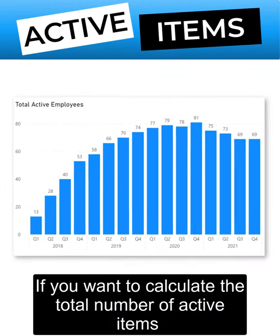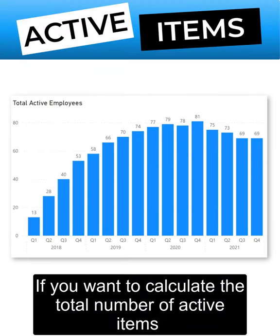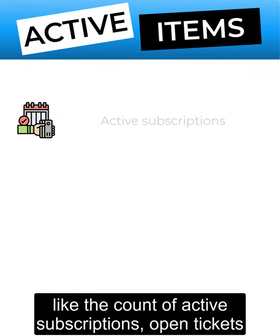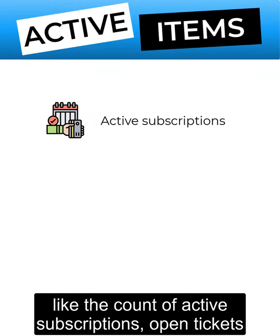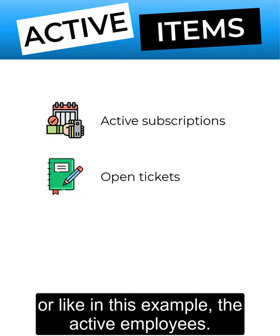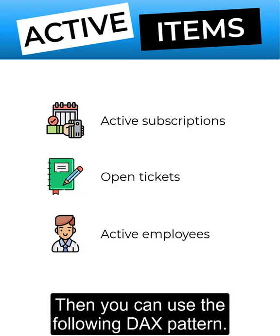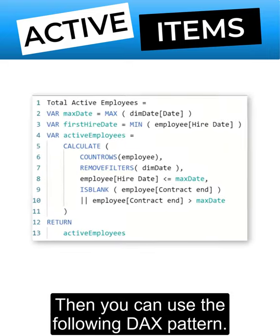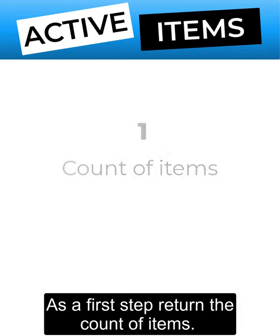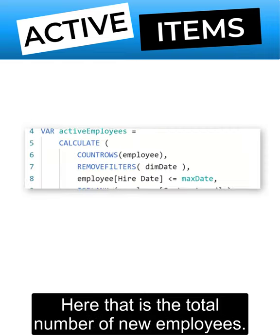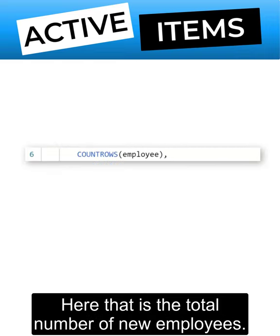If you want to calculate the total number of active items, like the count of active subscriptions, open tickets, or like in this example, the active employees, then you can use the following DAX pattern. As a first step, return the count of items — here, that is the total number of new employees.